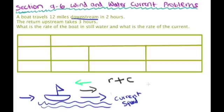But when you're coming back upstream, you're going to be going slower because you're fighting the current. The current is always going one way, but when you're trying to go the other way, you fight it. So your speed instead of being rate of your boat plus the current, it's going to be rate of your boat minus the current, because you're going against the current.